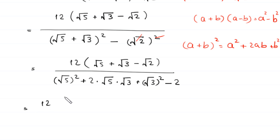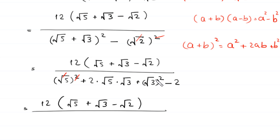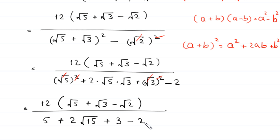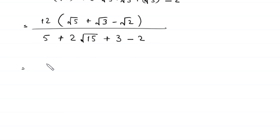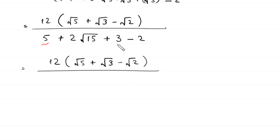The square and square root cancel for each term: root 5 squared gives 5, root 3 squared gives 3, and we are left with 2 times root 5 times root 3 which is 2 root 15. So the denominator becomes 5 plus 3 minus 2 equals 6, plus 2 root 15, giving 6 plus 2 root 15.